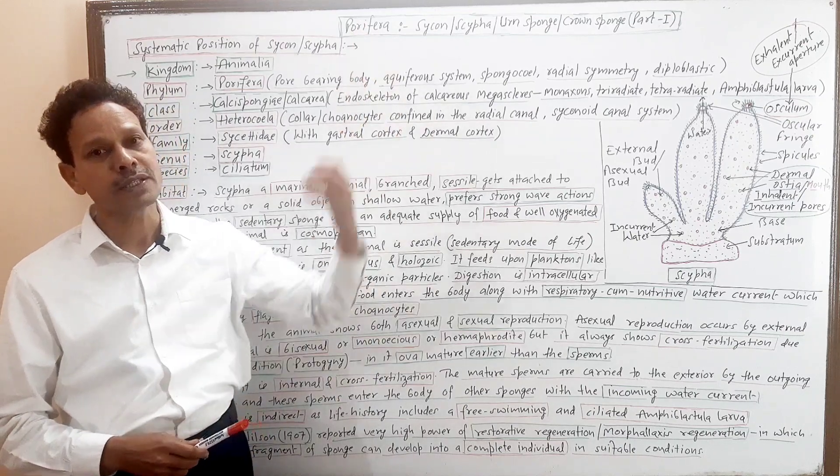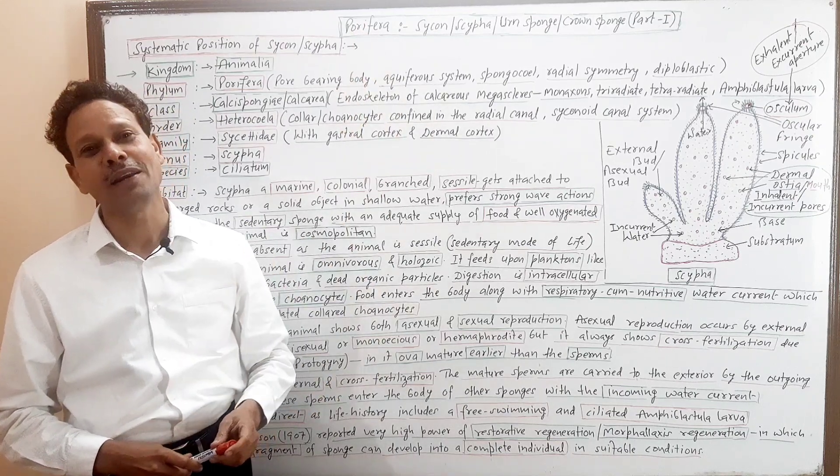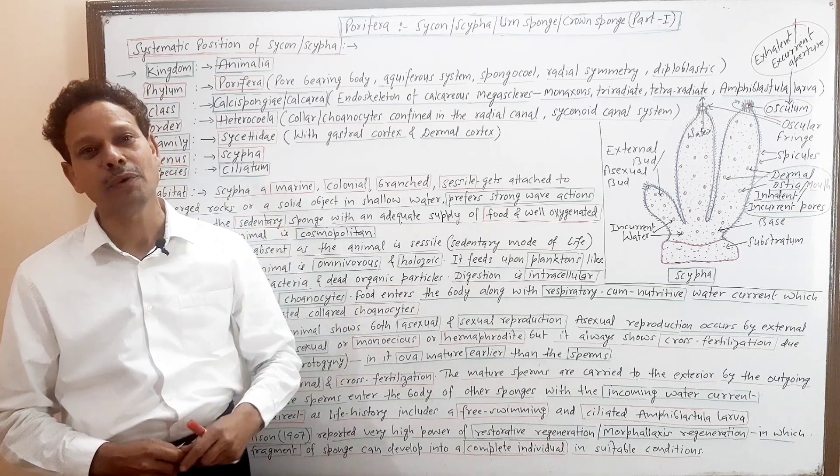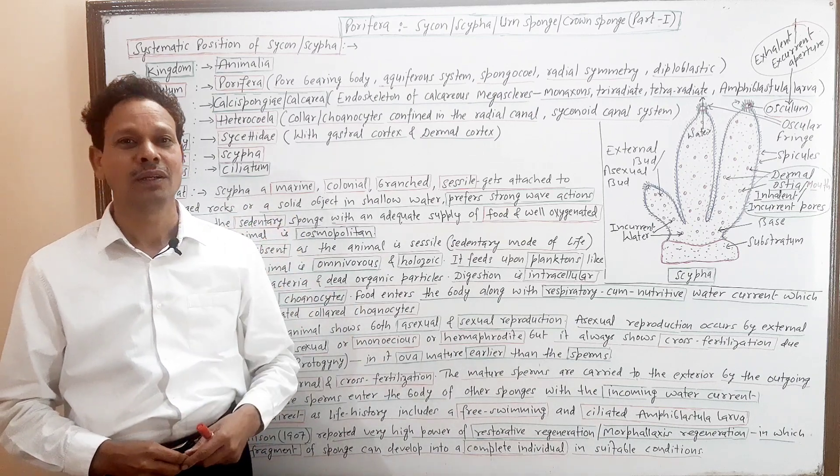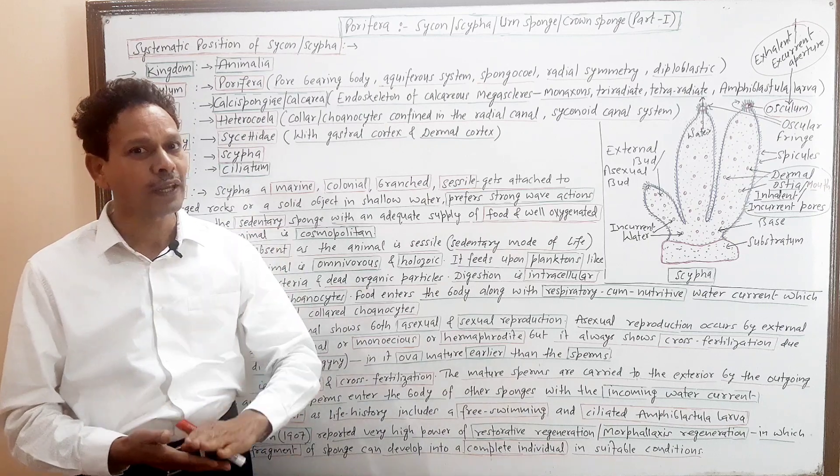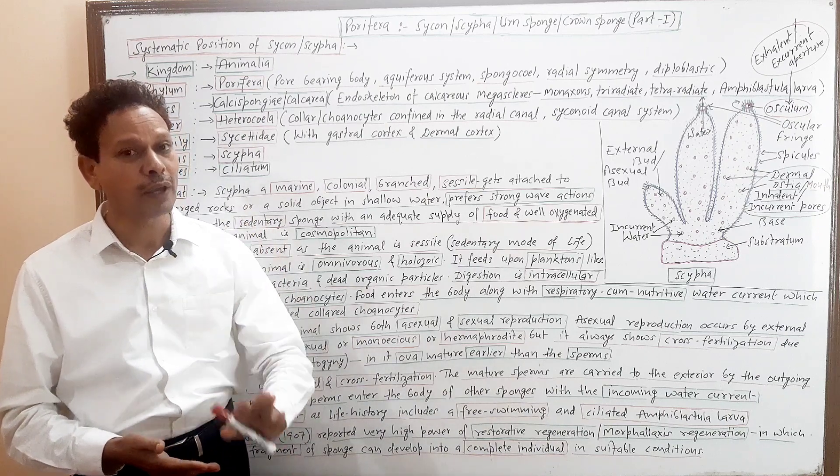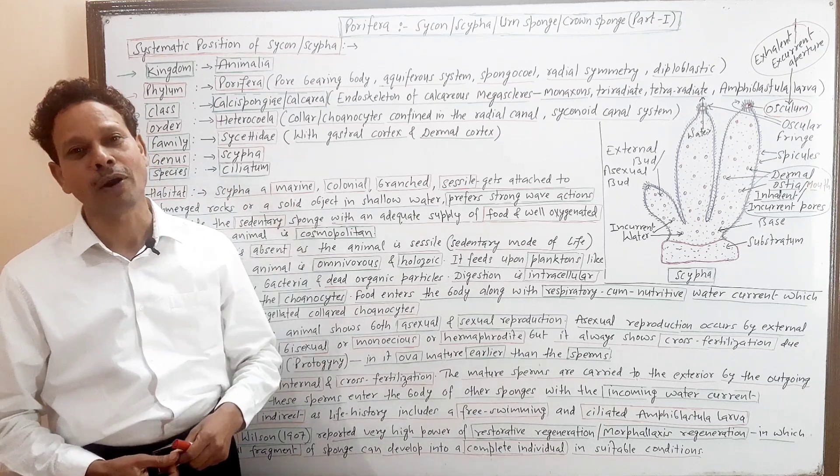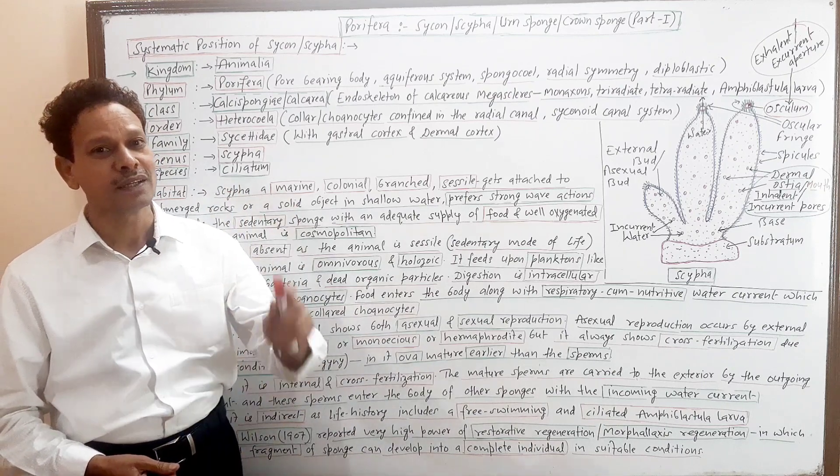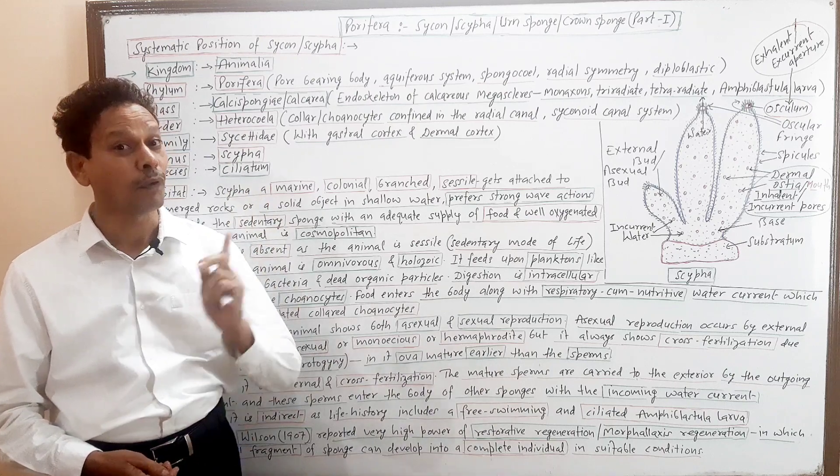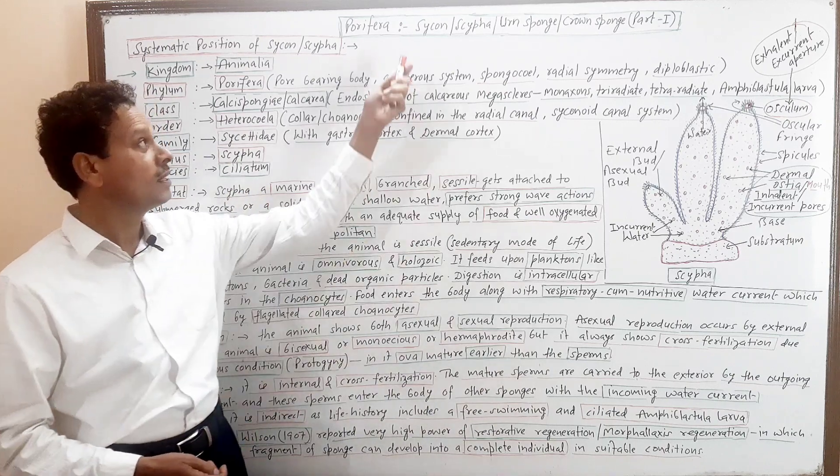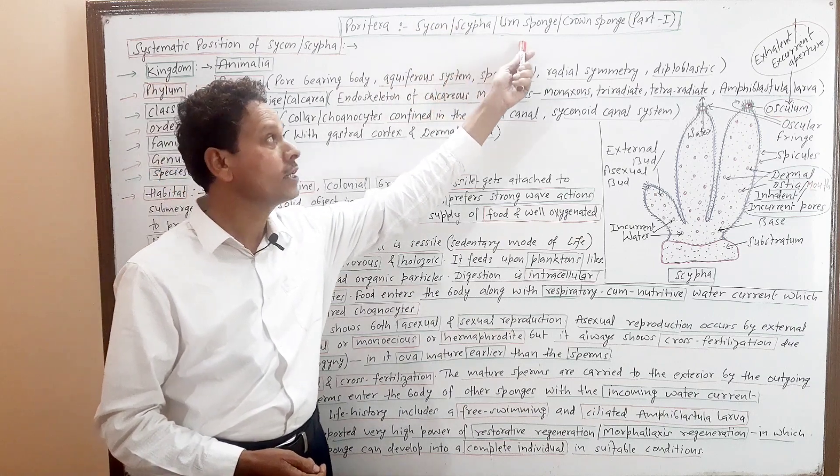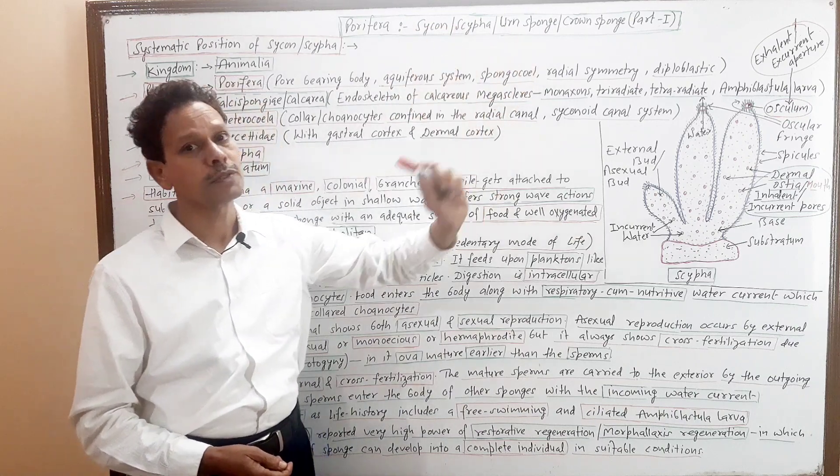Dear students, today we will discuss type study of phylum Porifera. Before this lecture, we have already given a lecture on phylum Porifera - classification, biodiversity, characteristic features, and economic importance. Today we will discuss type study of phylum Porifera, that is Sycon Scypha, urn sponge or crown sponge.